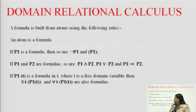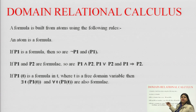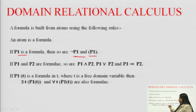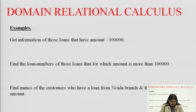The formulas for domain relational calculus are very similar to those in tuple relational calculus. If p is a formula, then NOT p and (p) are also formulas. If p1 and p2 are formulas, those combinations are also defined as valid formulas. Let us move to examples to make things more clear.